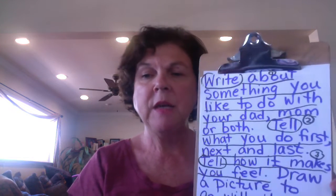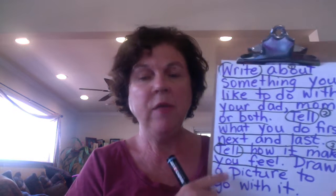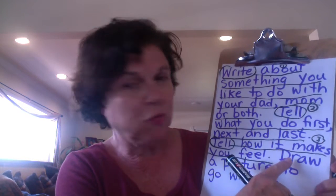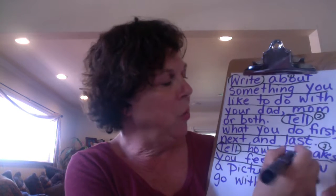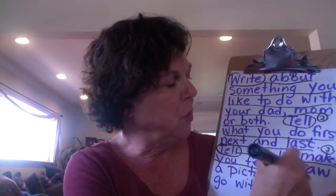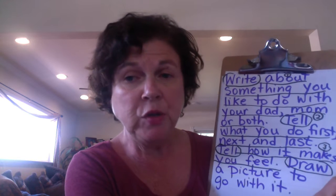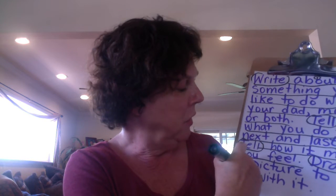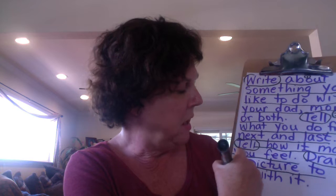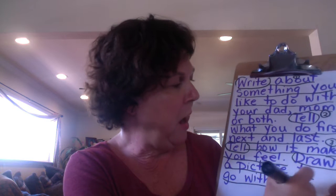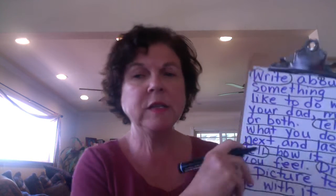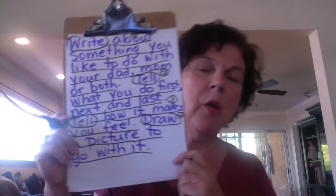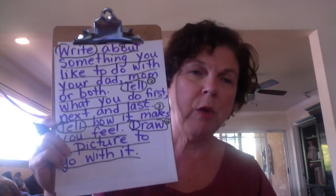The next one says 'tell how it makes you feel.' 'Tell' is another verb, so I'm going to circle it, underline the rest of the sentence, and put a three above it. And then my last sentence says 'draw a picture to go with it.' I'm going to circle 'draw' because draw is something you can do — it's a verb — and underline the rest of the sentence and put a four above that. So let's look at the prompt again to make sure we know exactly what we're going to write.